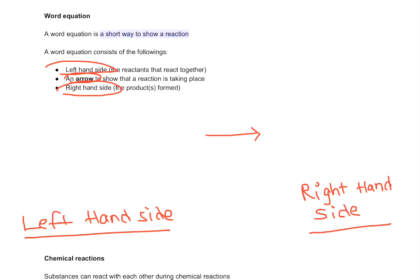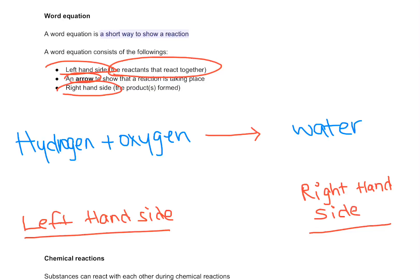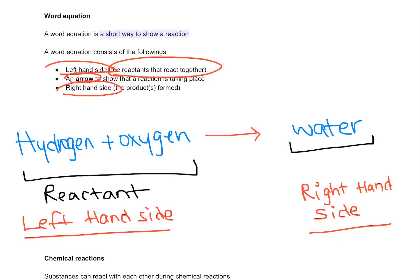What is shown on the left hand side? You have the reactants that come together, so there is a reaction taking place. Let's see the reaction between hydrogen and oxygen. Hydrogen and oxygen are on the left hand side because they are the reactants. They come together and the product is water. So water is on the right hand side.